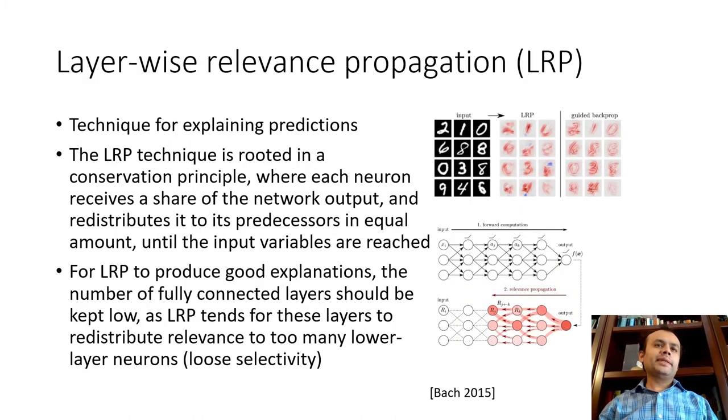Another well-known method is the layer-wise relevant propagation, or LRP. The main idea is based on the conservation principle. The idea is as follows. So we start with the output layer, and then we work backwards. So basically, each neuron receives a share of the network output redistributed to its predecessors in equal amount until you reach the input variable.